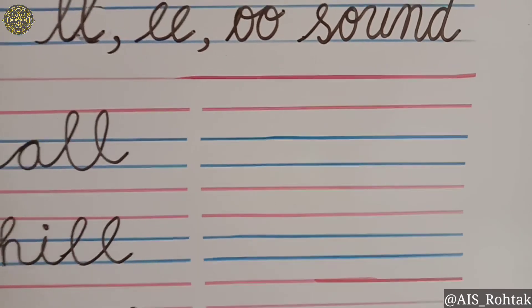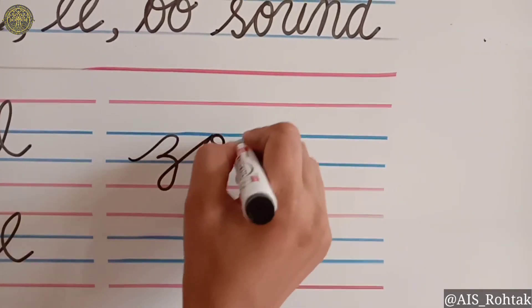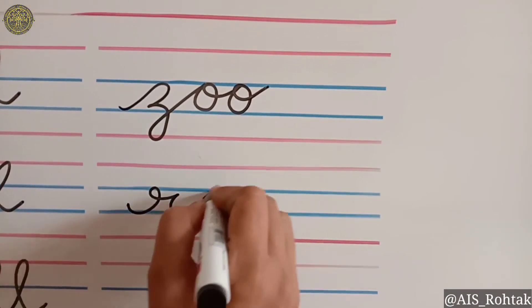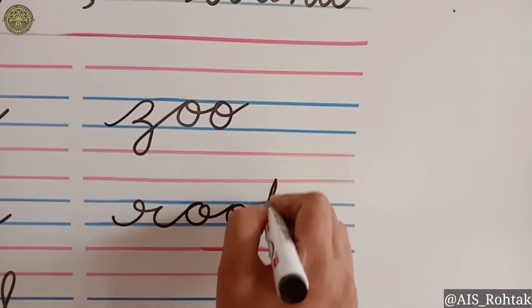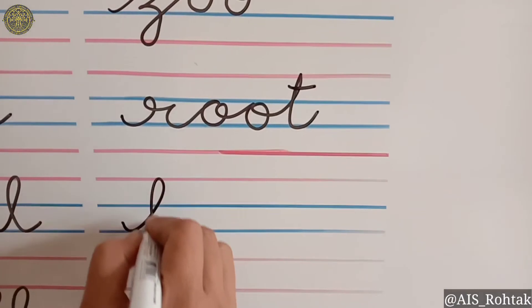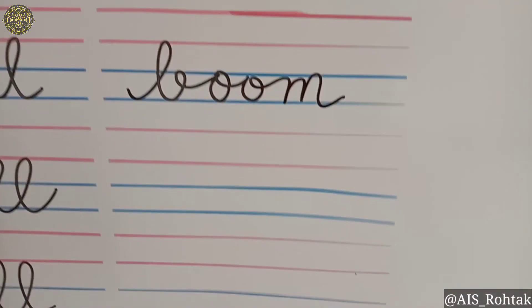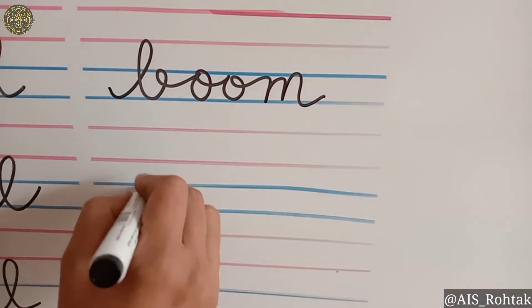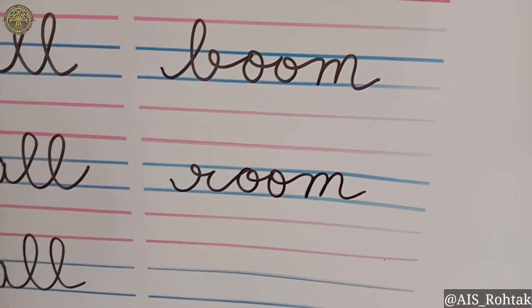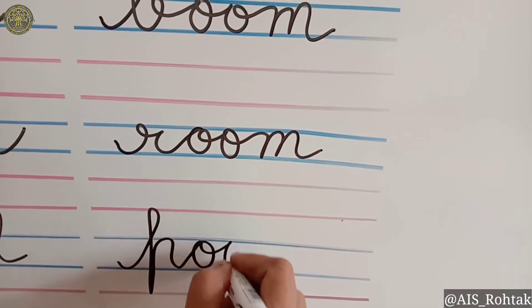Now we will write double O sound words. 'Zoo' — Z-OO. 'Root' — R-OO-T. 'Boom' — B-OO-M. 'Room' — R-OO-M. 'Pool' — P-OO-L.